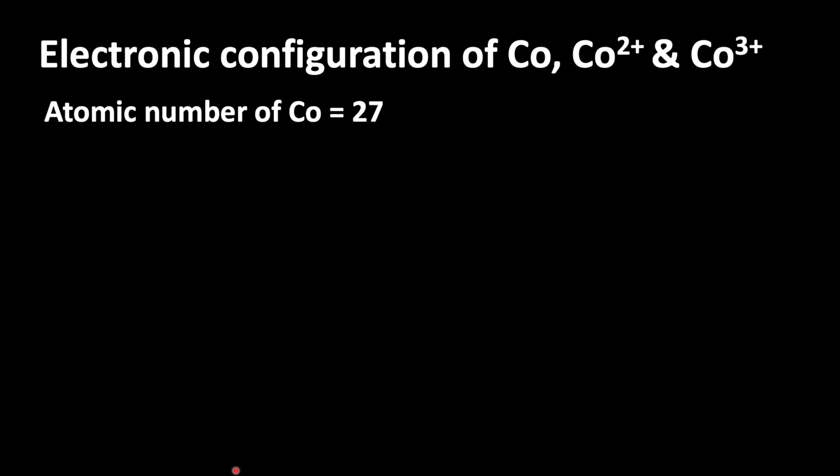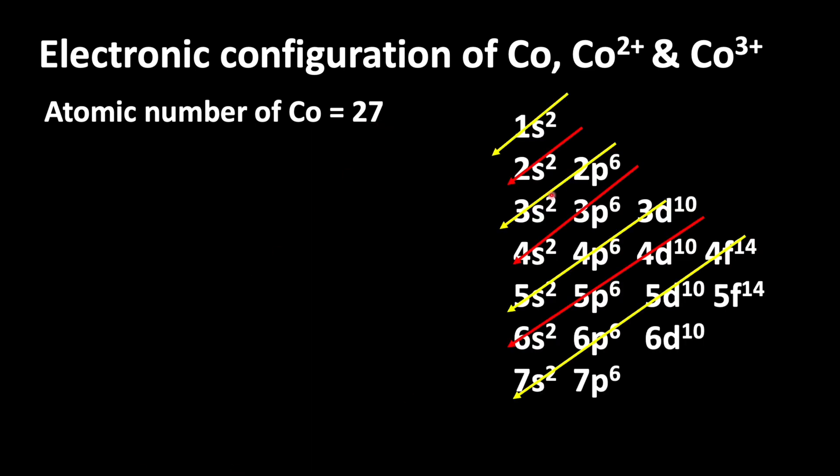From that we can write the electronic configuration. Here you can see the order of filling orbitals in increasing energy level. After filling 1s orbital, electrons enter 2s, then 2p, 3s, 3p, 4s, 3d. The maximum number of electrons in s orbital is 2, p orbital 6, d orbital 10, and f orbital 14.